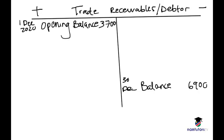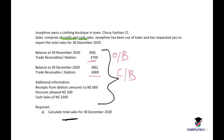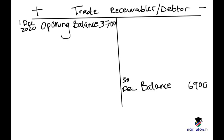Receipts from debtors amount to 600. This is money received from our debtors — we record it as bank — 600 on the credit side. The reason we put it on the credit side is that we have fewer debtors as people pay off their debt, so this asset account decreases, and assets always decrease on the credit side.